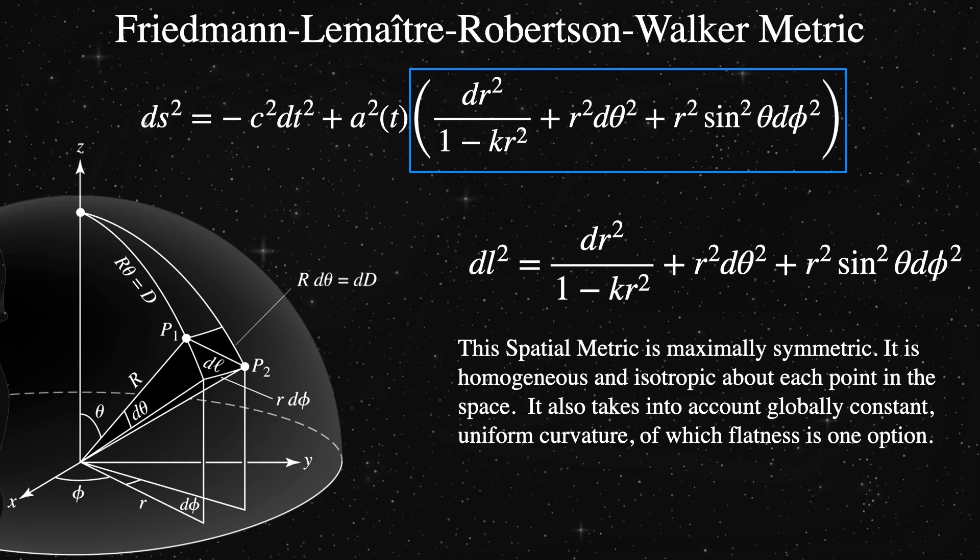It's also important to note that this spatial metric portion is called maximally symmetric. This means that every point is equally special in this space, or if you will, there are no special points in the entire space.